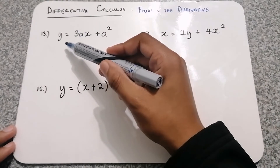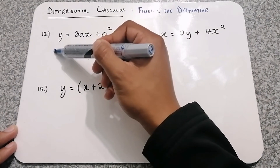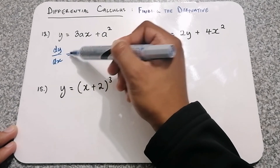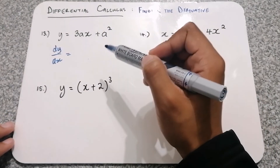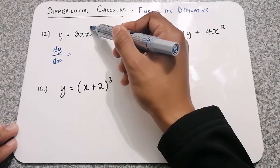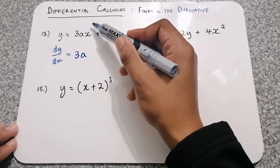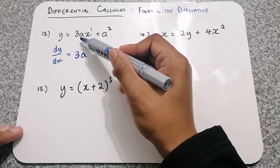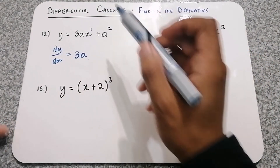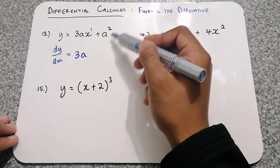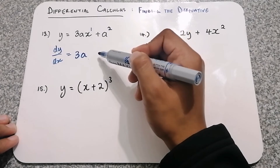For question 13, we have y equal to 3ax plus a squared. Remember we are differentiating with respect to x, so we only care about the exponents of x, not the exponents of a or any other variable. Consider x and its exponent, which is 1. We multiply that by the 3a, so it stays 3a. Then we minus 1, and basically the x to the power of 1 disappears because it becomes x to the power of 0, which is 1. The term a squared is a constant because there's no x, so it becomes 0.